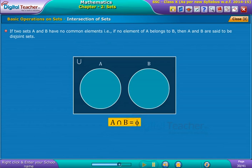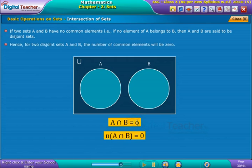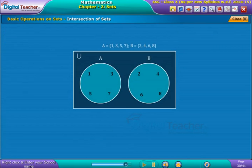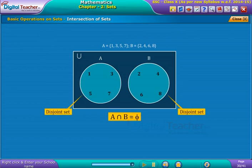For two disjoint sets A and B, the number of common elements will be zero. Suppose A and B are two given sets. As there are no common elements in A and B, such sets are known as disjoint sets.